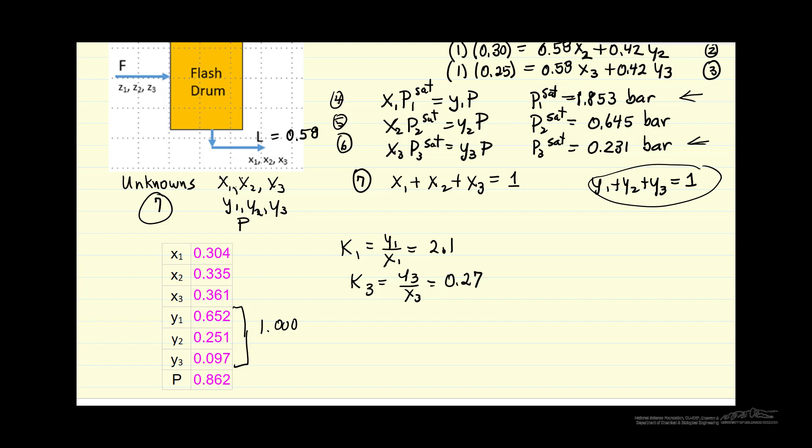So again, as we expect, the least volatile component is actually enriched in the liquid phase. And for K2, we can't predict ahead of time, but it turns out it's slightly enriched in the liquid phase. So this is only consistent with what we expect. We have to check the answers that we get from solver to make sure everything is consistent.